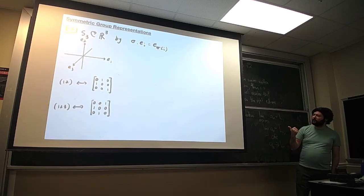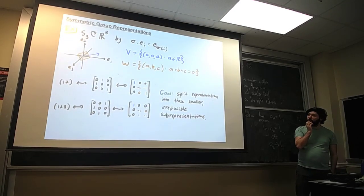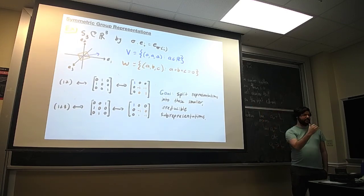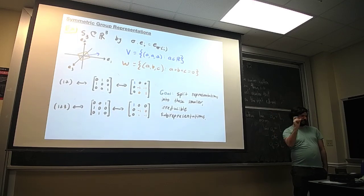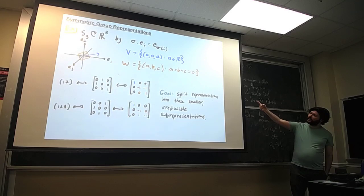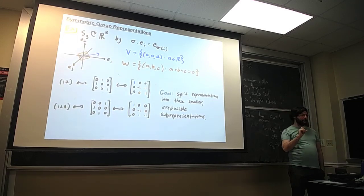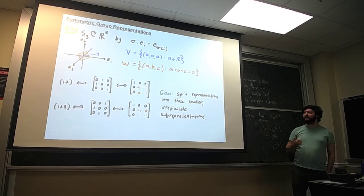I like this picture because it's a good way to illustrate the idea of a sub-representation. We can look at two subspaces: the space V in blue and the space W in orange. V is just this line, the span of (1,1,1). If we permute those coefficients, we stay on that line — in fact we don't change anything at all because all three are the same. Then we have the plane orthogonal to it in orange — all vectors whose coefficients sum to zero. If we permute those coefficients, we may get a different vector but its coefficients still sum to zero. These are called sub-representations or invariant subspaces.